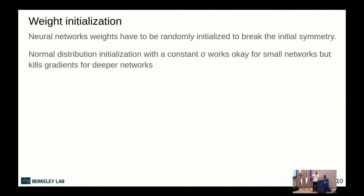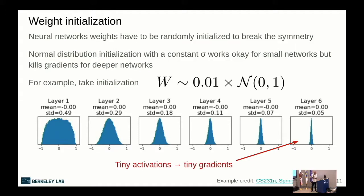The first thought is to use a normal distribution with some constant standard deviation. This works for shallow networks, but in deeper networks activations tend to collapse toward zero mean. For example, initializing with a standard deviation of 1% causes each successive layer's activations to narrow — by the sixth layer you're already at 0.05 standard deviation. Since activations approach zero, gradients also approach zero through the chain rule in backpropagation, killing learning early on.